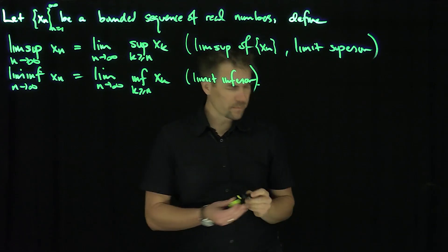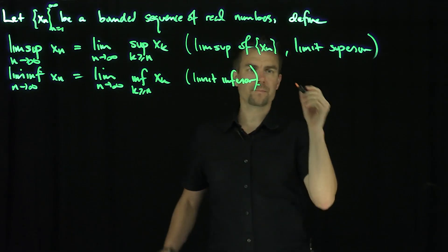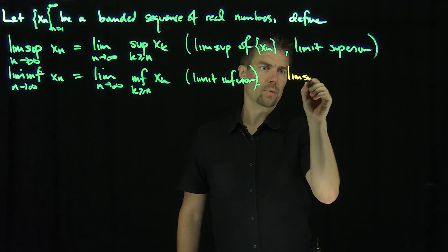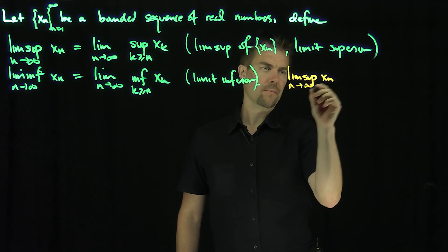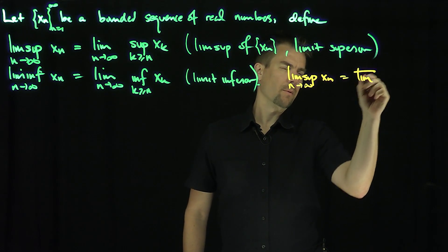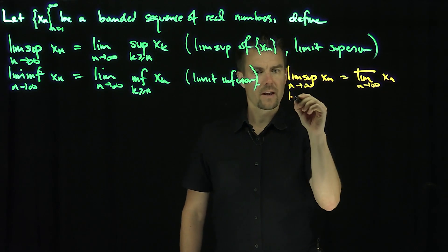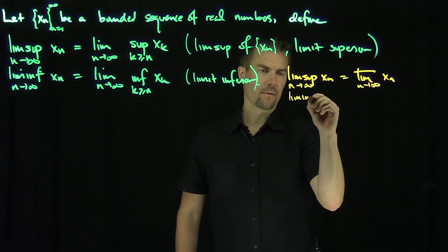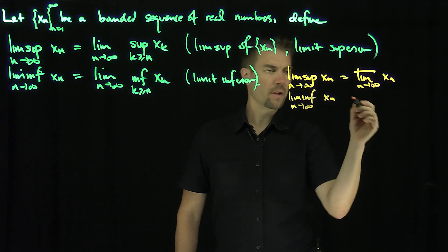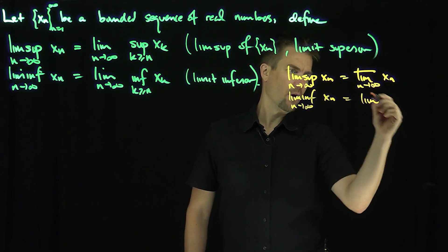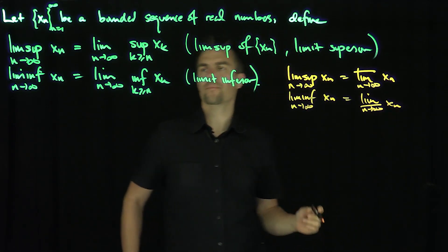As a remark, the lim-sup of xn as n goes to infinity is oftentimes written as lim with an upper bar as n goes to infinity of xn, and the lim-inf of xn as n goes to infinity is written as lim with a bar underneath — just to save notation.